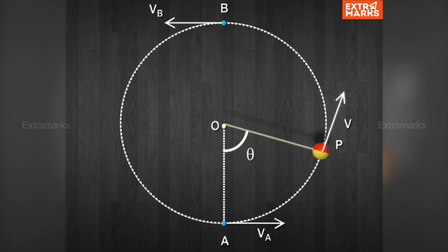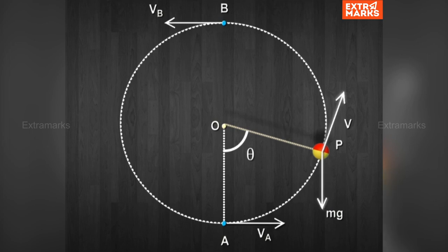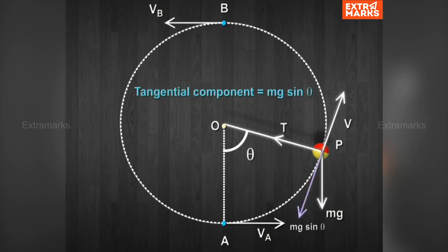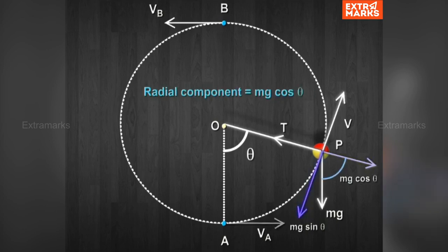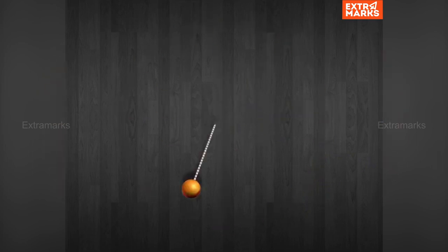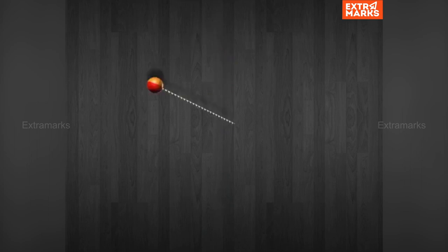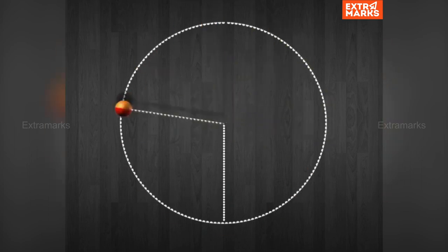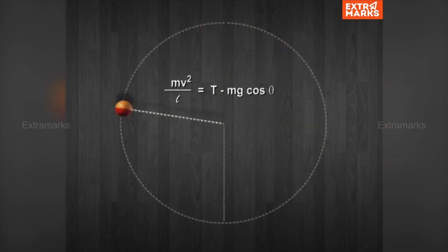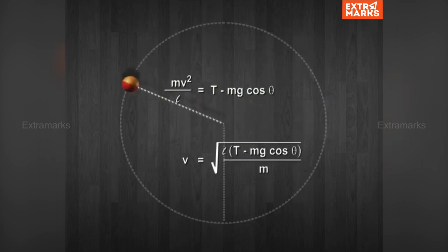The direction of velocity at P will be tangentially outward. The forces acting on the object at point P are: the weight mg acting vertically downward, and the tension T in the string directed towards the center of the circle. We can resolve the weight into two components — the tangential component mg·sinθ and the radial component mg·cosθ. The net radial force will be T minus mg·cosθ, and this net force provides the required centripetal force to keep the object in circular motion.